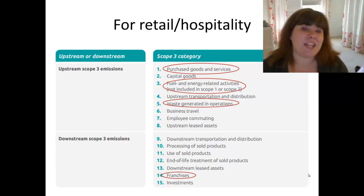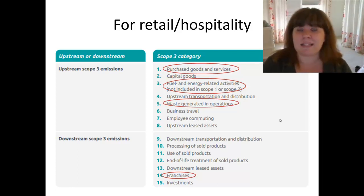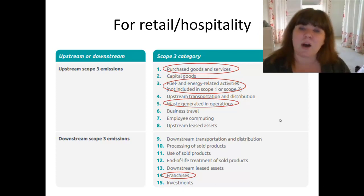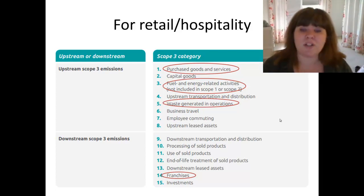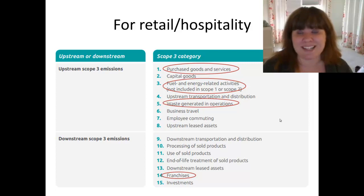If you are a retailer or in hospitality, you want to be looking at purchased goods and services — the things you bring in that are available for sale or use by your employees. You also want to think about fuel and energy-related activities, such as the energy people need to expend to get to your ski resort — it's not directly your impact, but it is part of your overall operations. You may also want to look at waste generated in operations, since retail and hospitality are typically quite waste-intensive. And if you have franchises, this is where your franchise activity comes into play — you may not have direct control over those operations, but you do have indirect control and influence, and that carbon footprint impact gets categorized here.